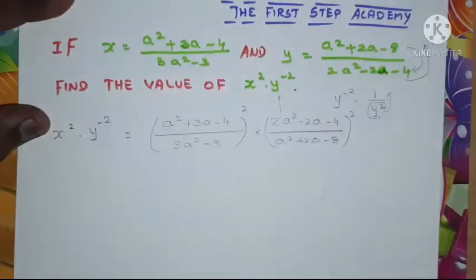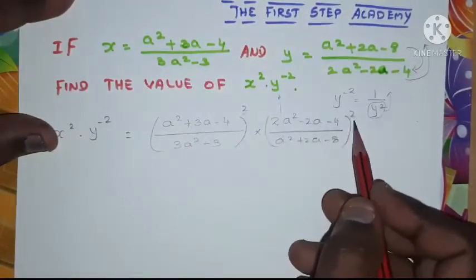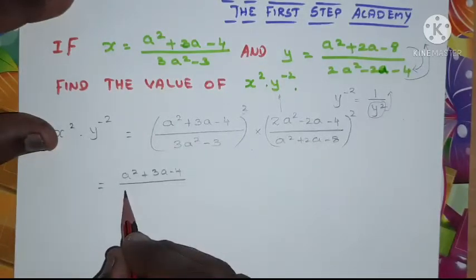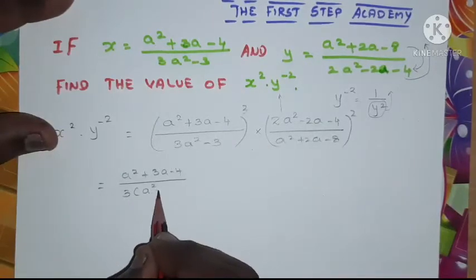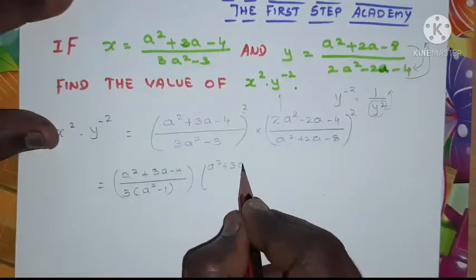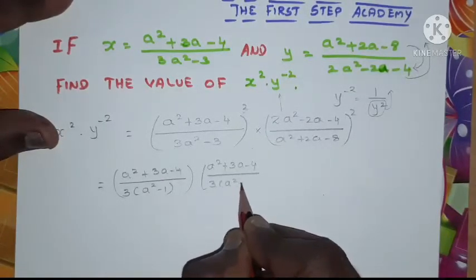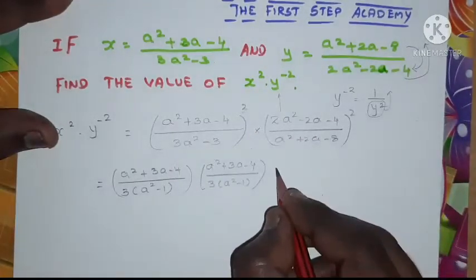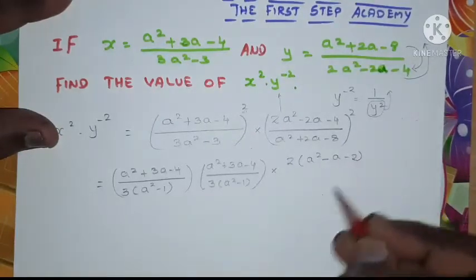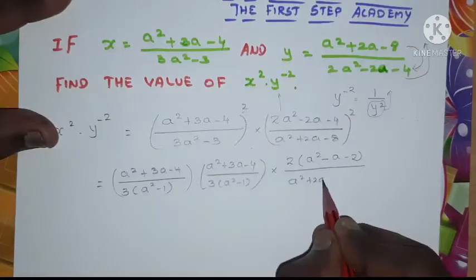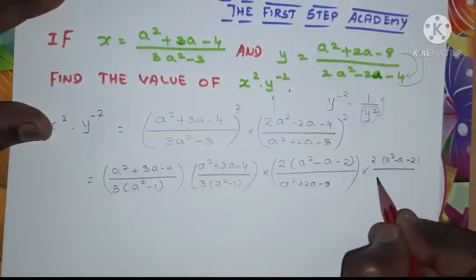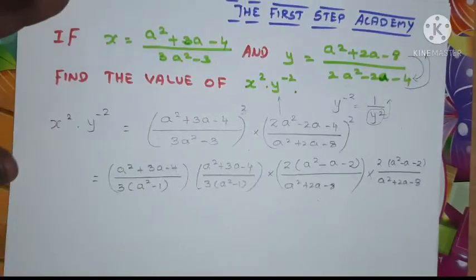Now I'm going to split this because it is raised to power 2. So (a² + 3a - 4) / (3a² - 3) splits as (a² + 3a - 4) / (3 · (a² - 1)), since 3 is common. Similarly for the y reciprocal part, 2 is common so it becomes (a² - a - 2) / (a² + 2a - 8), written twice as two separate equal factors.